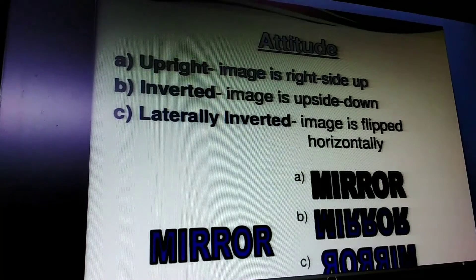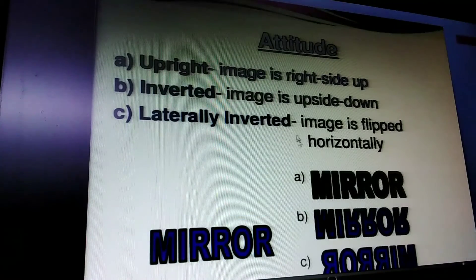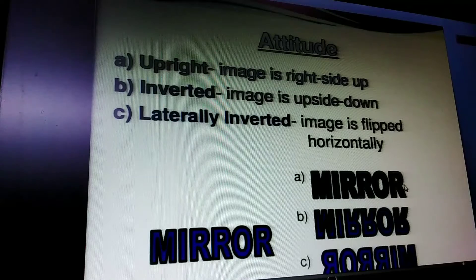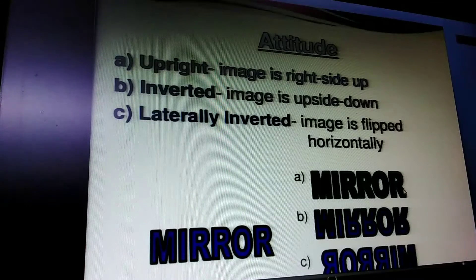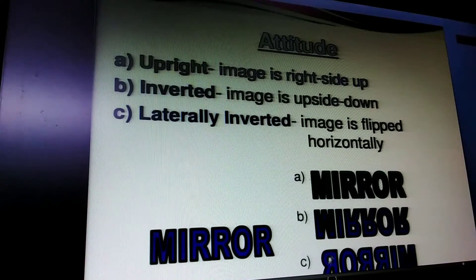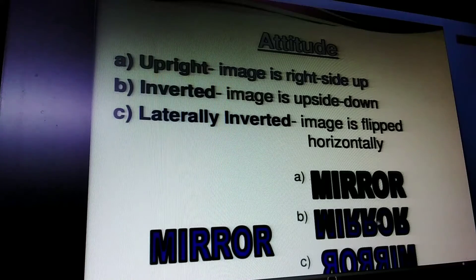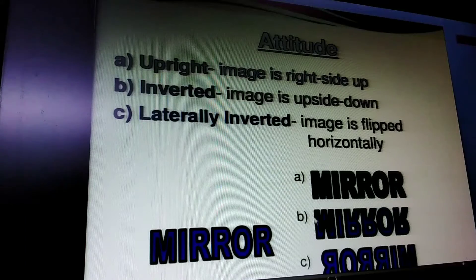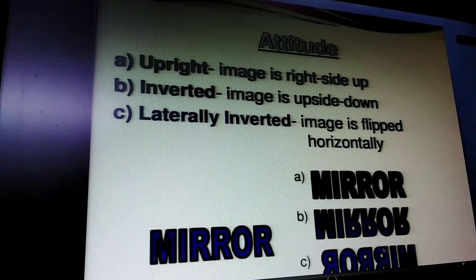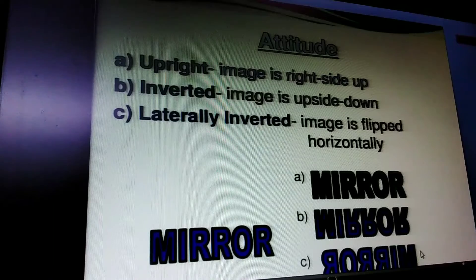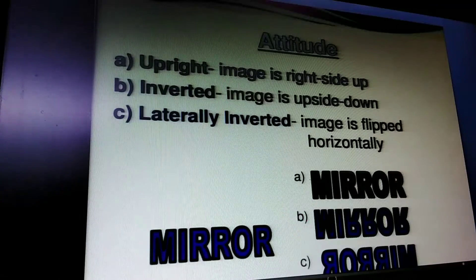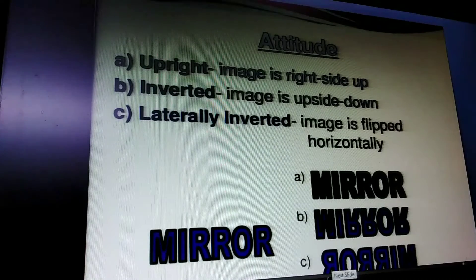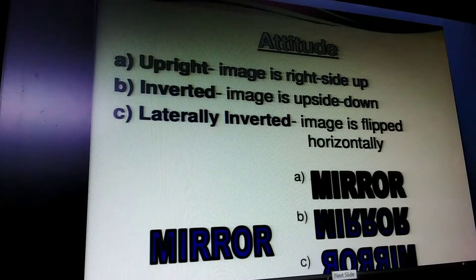Now coming to attitude. Upright images are right-side up, which are virtual images. Inverted images are upside down, which occur with real images. Laterally inverted means the image is flipped horizontally, so the right side looks like the left side and the left side looks like the right side.